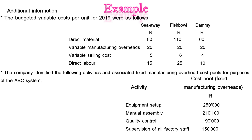The company identified the following activities and associated fixed manufacturing overhead cost pools for purposes of the ABC system. Under activities you have equipment setup, manual assembly, quality control and supervision of all factory staff. They've split them up for you, which is quite nice. The company has allocated 250,000 Rand to equipment setup — that is equipment setup for COA, Fishbowl and Dami — and similarly for manual assembly, quality control and supervision of all factory staff.